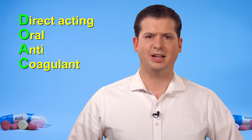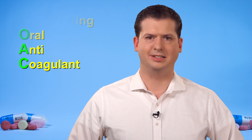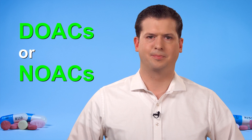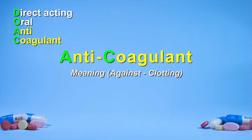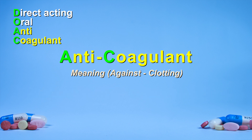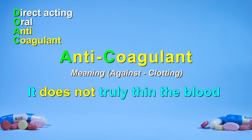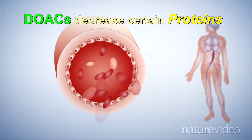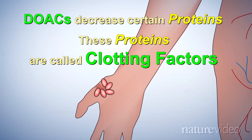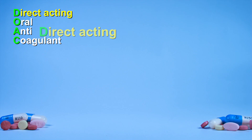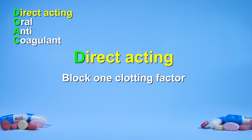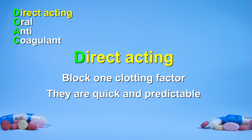The full name for these medications is direct acting oral anticoagulants, usually shortened to DOACs. You may also hear some people call these medications NOACs. An anticoagulant is a medication that reduces the body's ability to form blood clots. Although often called a blood thinner, it doesn't actually affect the thickness of blood — it decreases certain proteins called clotting factors. DOACs are called direct acting because they block only one specific clotting factor, making their effect quick and predictable.